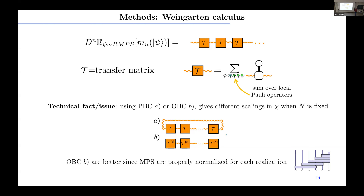There is a technical point: there is a small difference between periodic boundary conditions (PBC) and open boundary conditions (OBC). You get slightly different results, particularly in the regime where k scales with N. It turns out OBC are better because random MPS generated with OBC correspond to a properly normalized circuit — whereas PBC don't give properly normalized states. So the results I'm going to show are done with OBC and are more reliable.